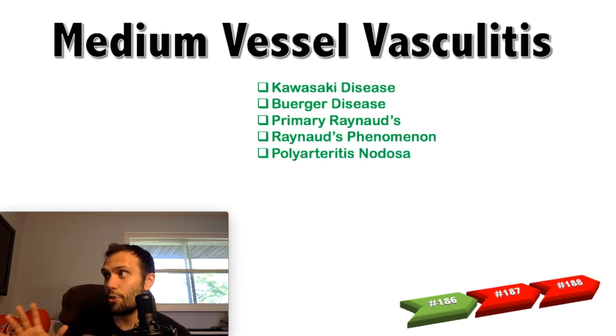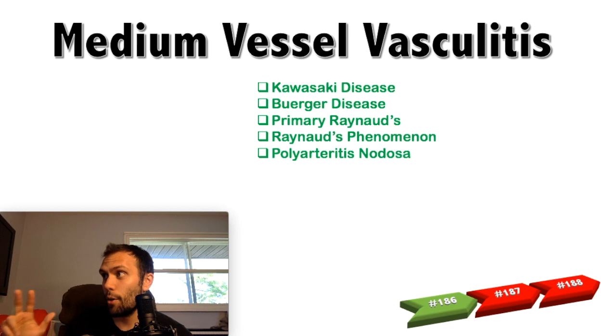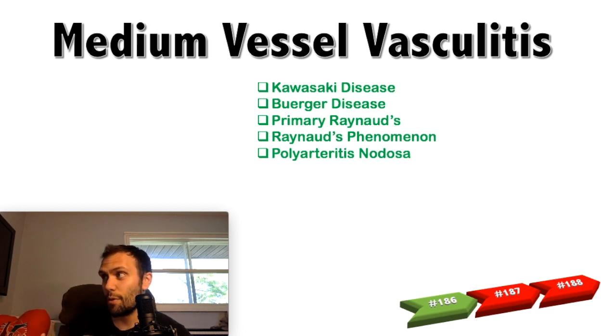As far as medium vessel vasculitis goes, there are five major types: Kawasaki disease, Buerger's disease, primary Raynaud's, secondary Raynaud's (also known as Raynaud's phenomenon), and polyarteritis nodosa.